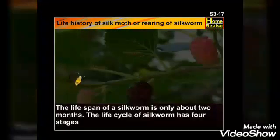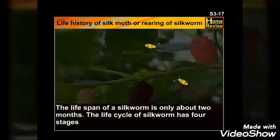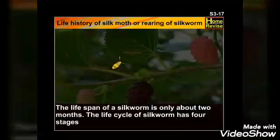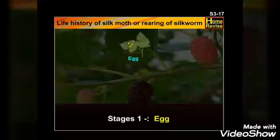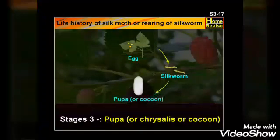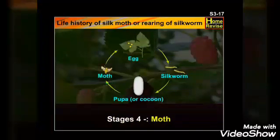The lifespan of a silkworm is only about two months. The life cycle of the silkworm has four stages: first, the egg; second, the silkworm; third, the pupa or chrysalis or cocoon; and fourth, the moth.